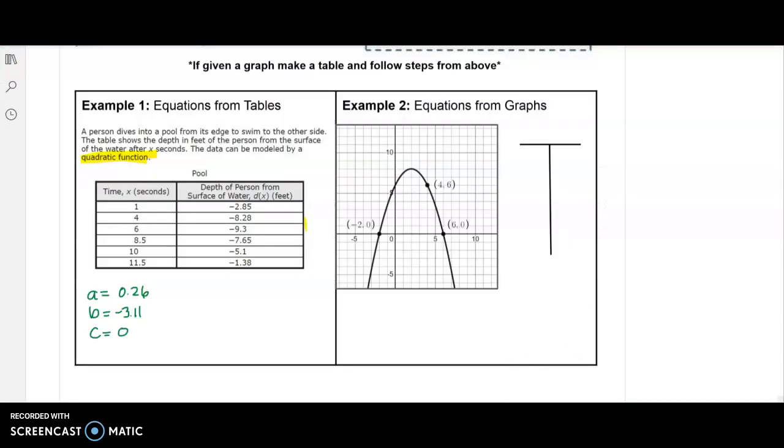So now we can write our equation now that we have A, B, and C. Y equals, the A goes first, just like alphabetical order, after the A is the X squared, minus, because it's a negative, the B value is negative 3.11, X goes after the B.